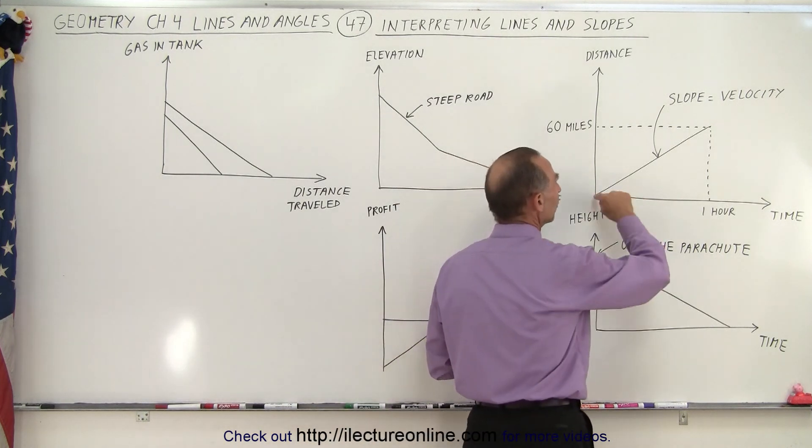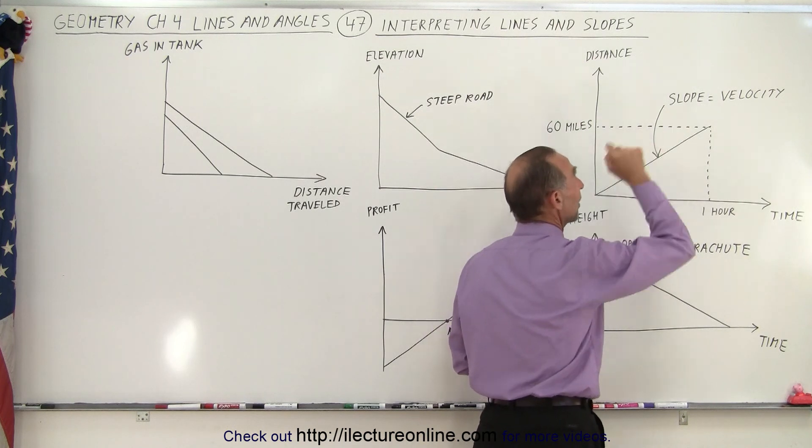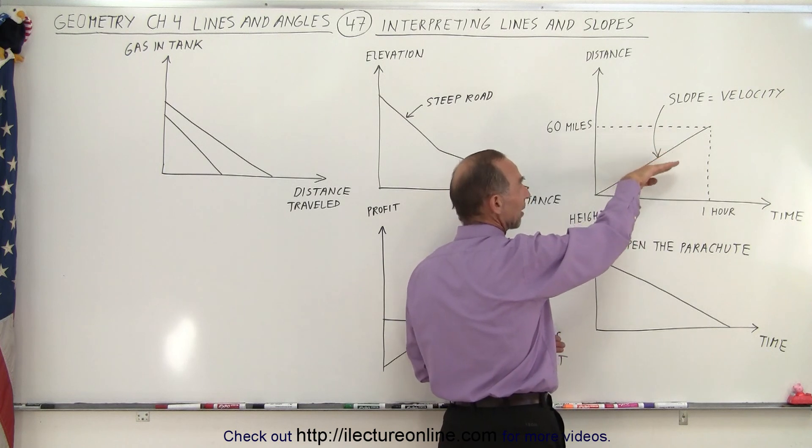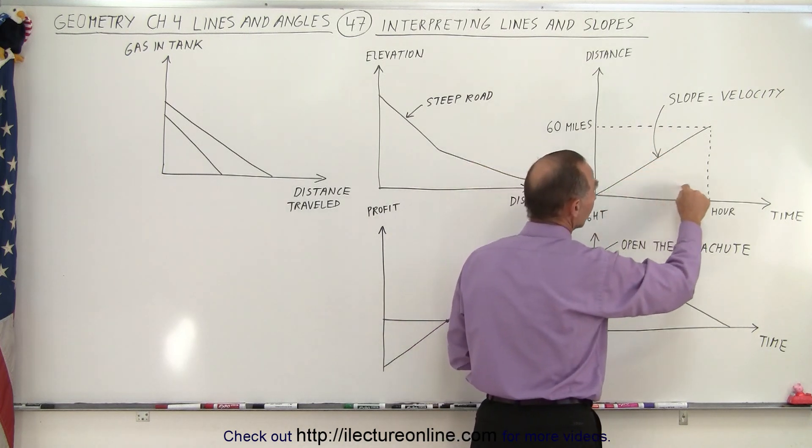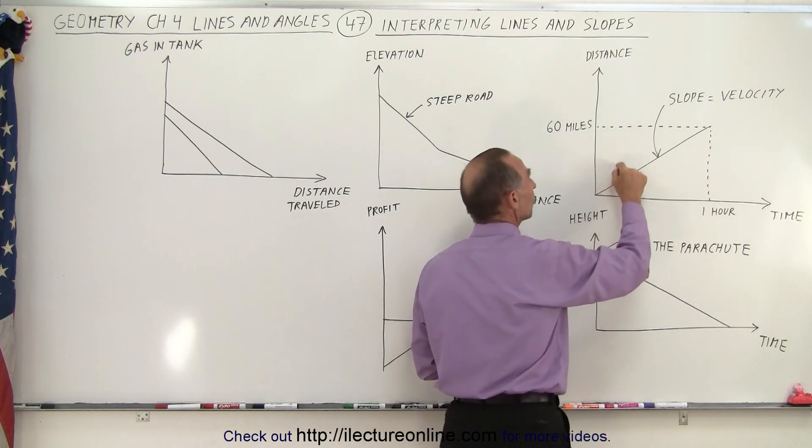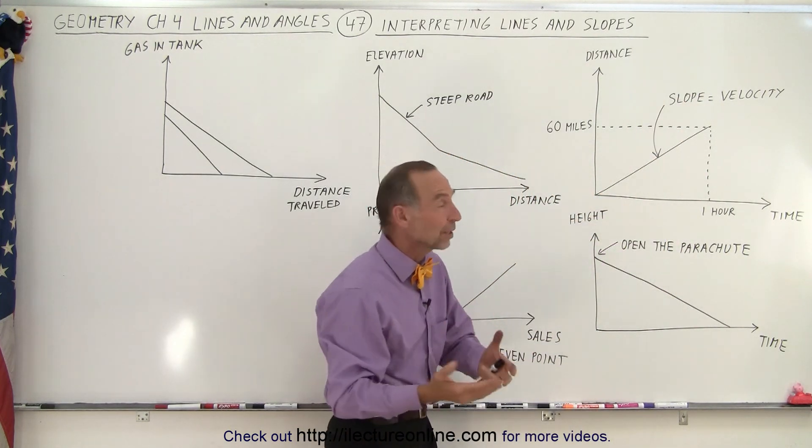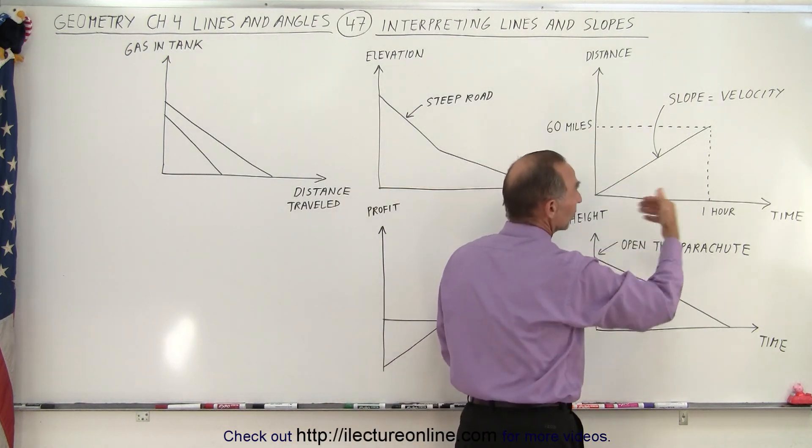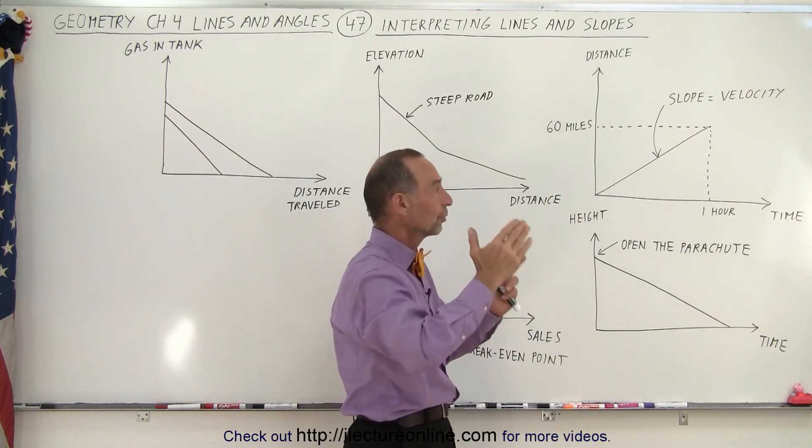You can also see that the slope has a particular representation. The slope actually tells you how fast you're traveling. The faster you're traveling the steeper the slope, the slower you're traveling the less steep the slope. Meaning if you're traveling on a bicycle the slope would look like this. If you're in a race car the slope would look like this. So the slope represents the speed at which you're traveling. In this case the velocity is 60 miles in an hour or 60 miles per hour, so that's equal to the slope, the rise over the run.